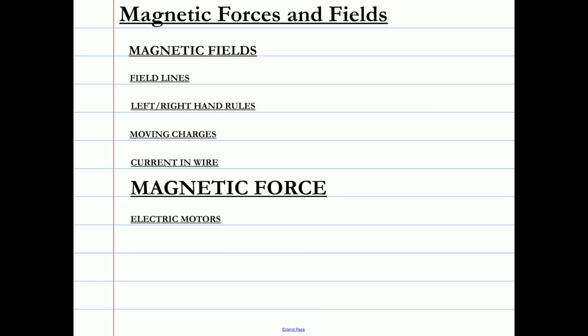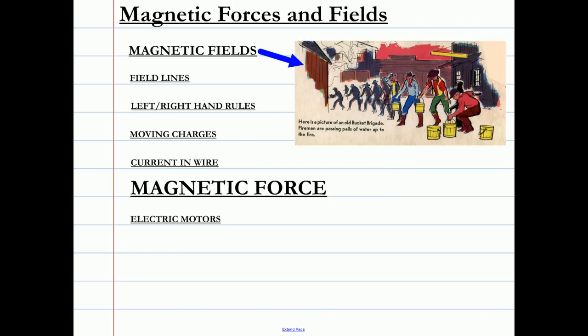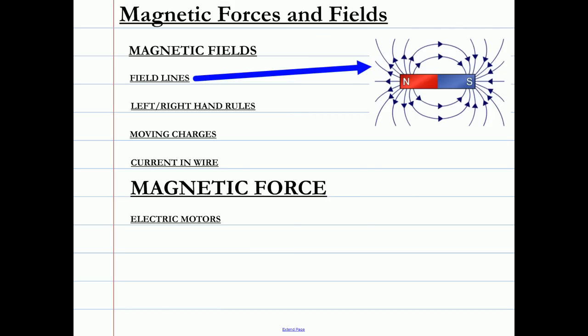The final portion of unit B deals with magnetic forces and fields. We can use the concept of a field to help explain action at a distance. You can think of a magnetic field as a bucket brigade communicating to nearby charges and magnets. Magnetic field lines originate in the north and terminate in the south. The lines are closer together where the field is stronger.